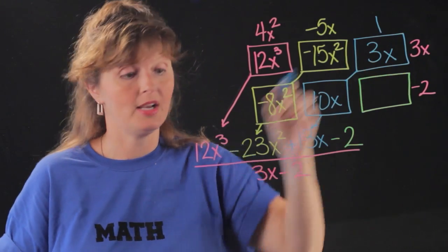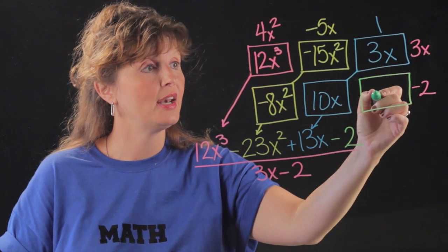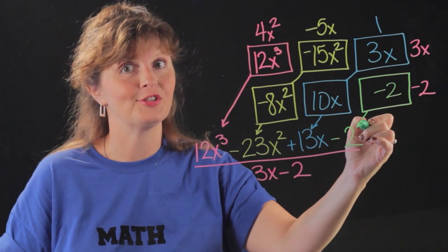Because 1 times 3x is 3x. And then I multiply 1 times -2 and I get -2. Is that the same there? Sure is.